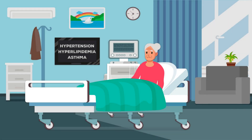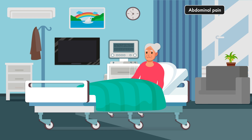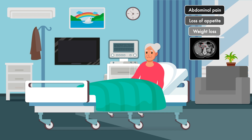Grace Peters is an 83-year-old female with a past medical history of hypertension, hyperlipidemia, and asthma. She presented to the emergency room one day ago complaining of abdominal pain, loss of appetite, and recent unintentional weight loss. A CT scan showed a pancreatic mass, and now she is admitted under internal medicine for further evaluation of suspected cancer.